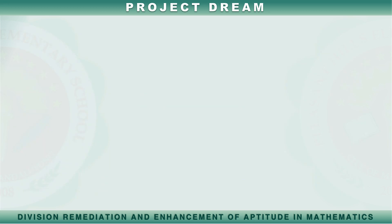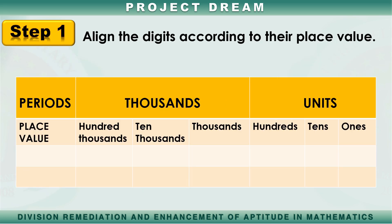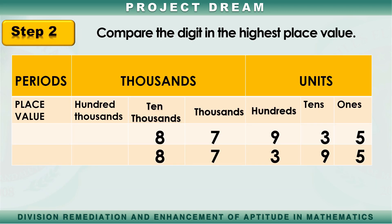Now, let's compare numbers using this example. Follow these steps to compare two numbers. Step 1: Align the digits according to their place value. Step 2: Compare the digits in the highest place value. In this example, the highest place value is in the ten-thousands place.